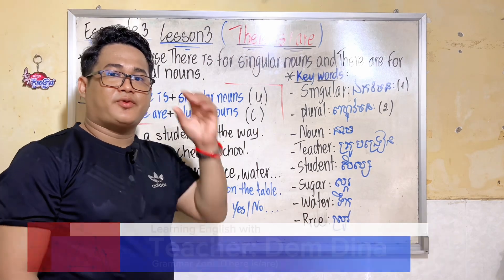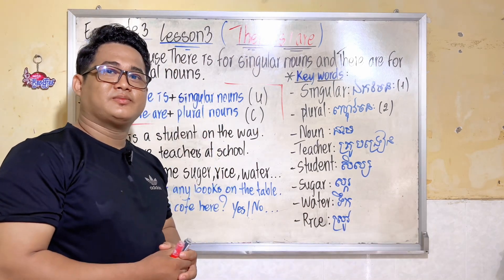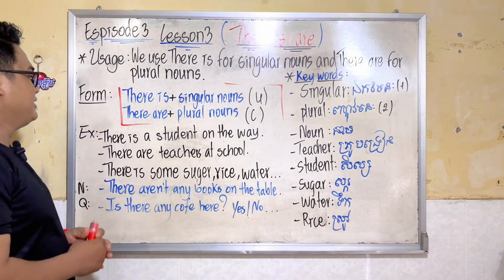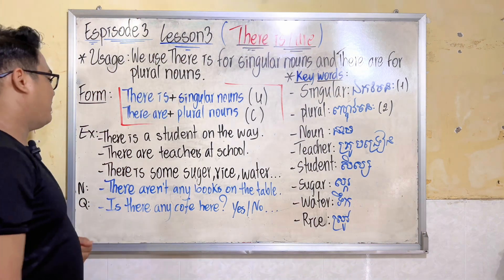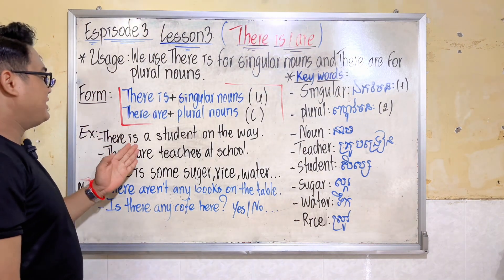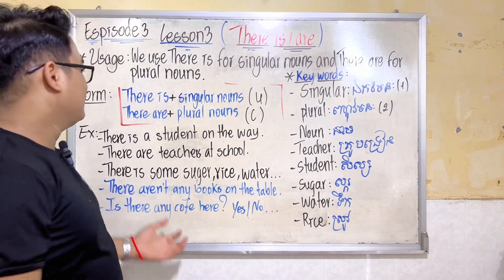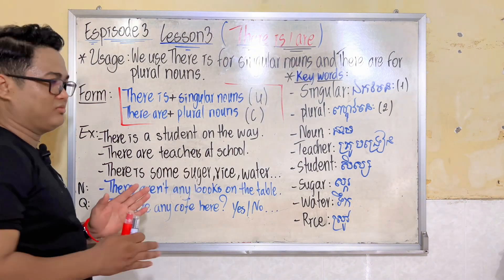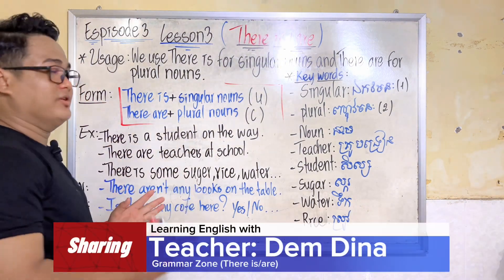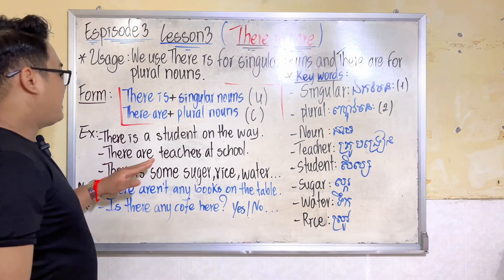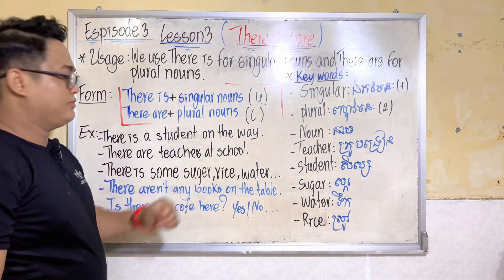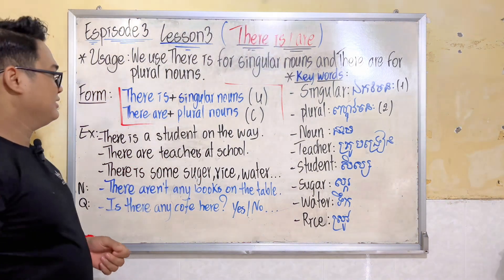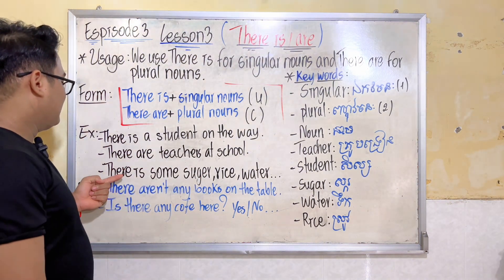Hello everyone, any questions about the form? No questions — thank you so much. Okay, now I want to show you some examples. For example: 'There are students on the way.' 'There are teachers at school.'